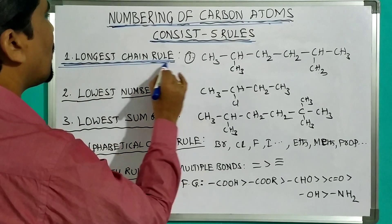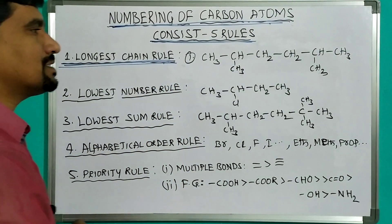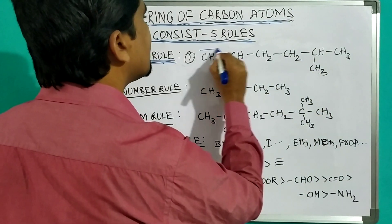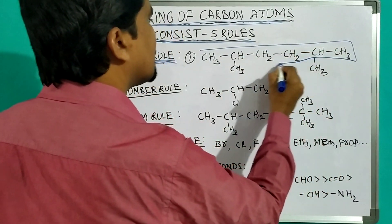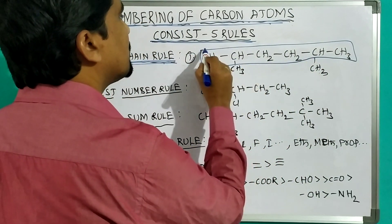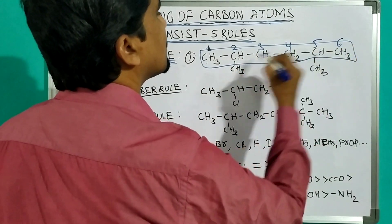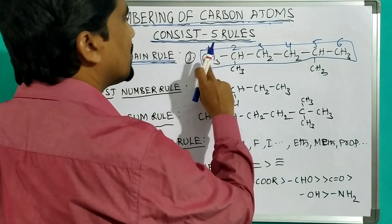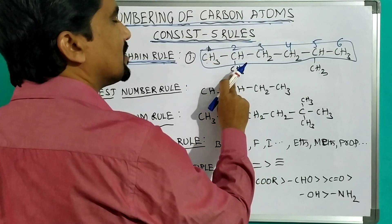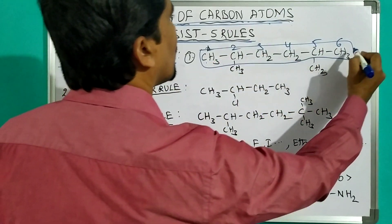The first rule is the longest chain rule. In the longest chain rule, we must select the longest chain in the given structure. Here, in this example, this is the longest chain because it has six carbons. Whereas, if I selected like this, it has only one, two, three carbons. Comparing three with six, six is more, so this is the longest chain.